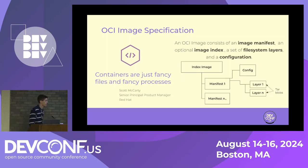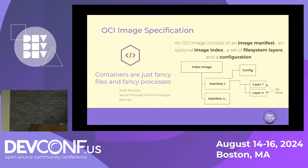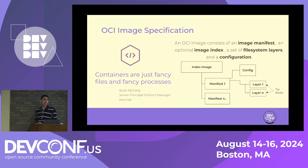Here's the lineage of how these all play together: you have an index image, which has an index, which points to an image, which has a set of manifests, which has a config and several layers. That in a nutshell is a 30,000-foot view of what a container looks like today.